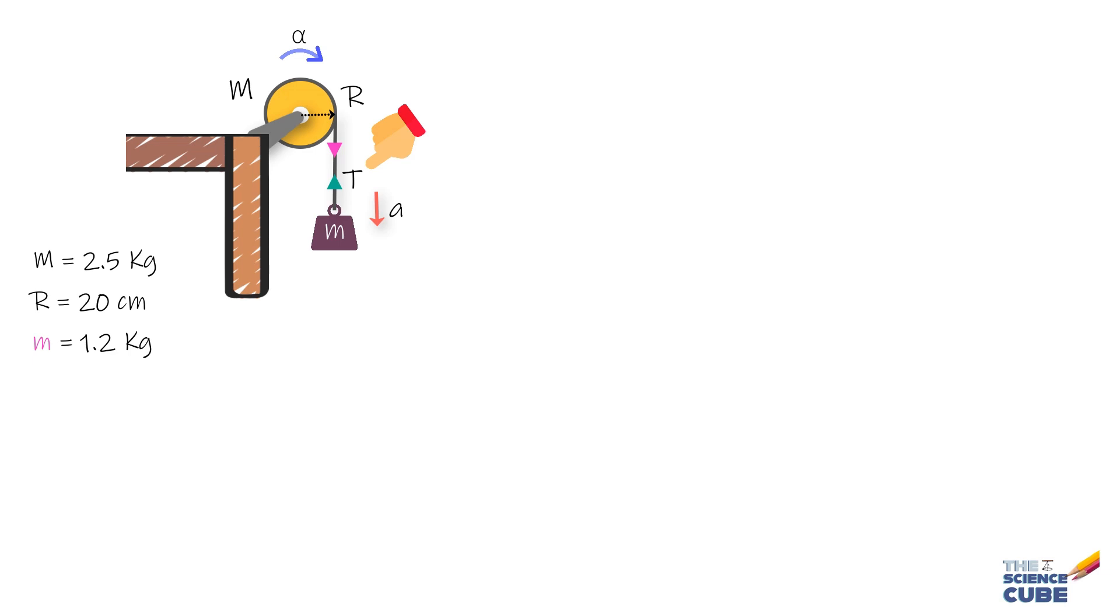The approach to take in such problems is to treat the block and the disc as two separate systems. So for the hanging block that we will call system 1,